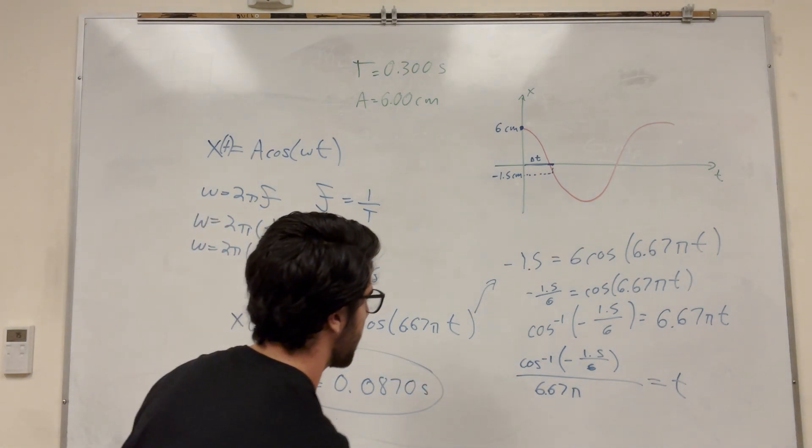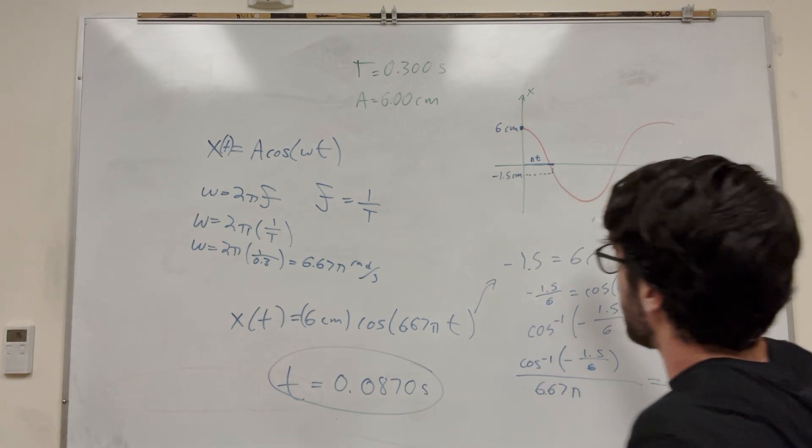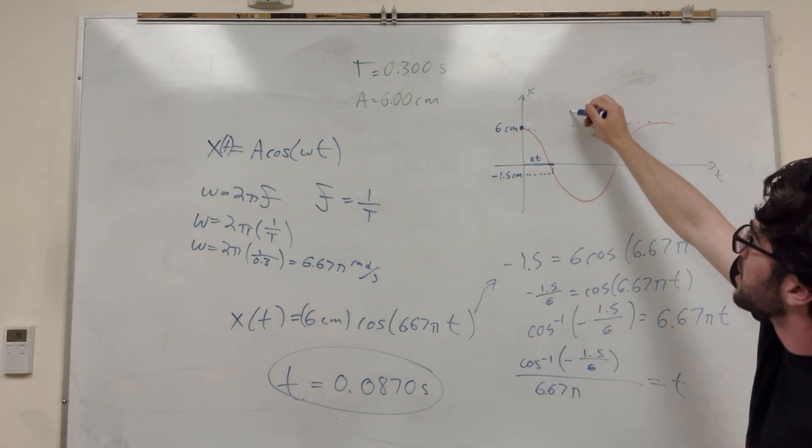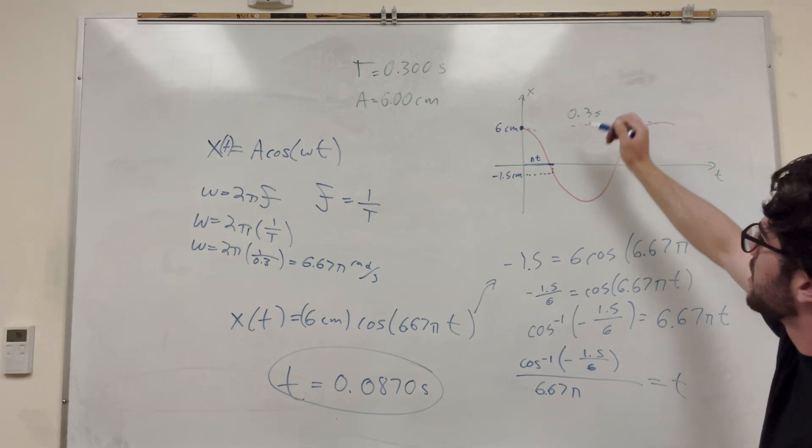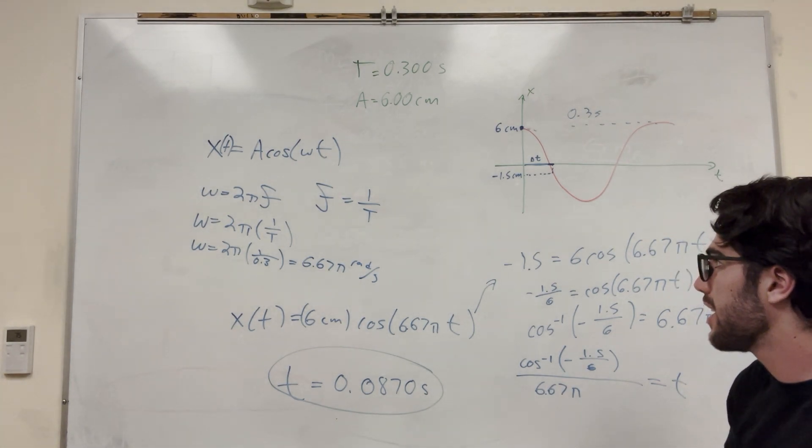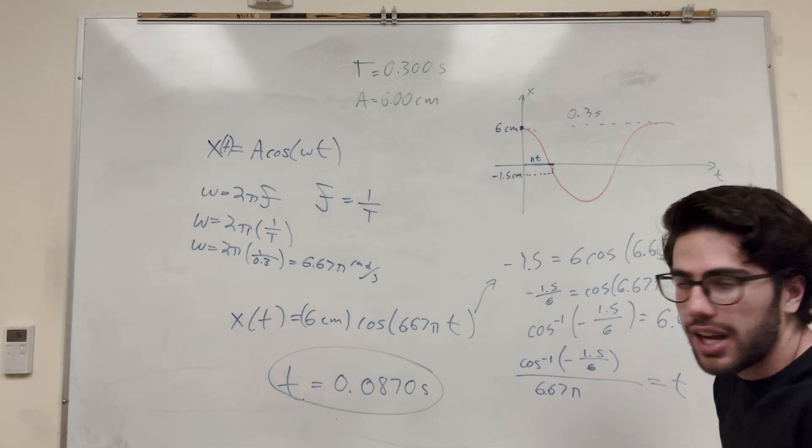So that's the time, basically. And that kind of makes sense, right? Because we know its period, which is the time it takes to go from here to here is 0.3 seconds. And then this is 0.08, it's about a fourth. Yeah, that kind of makes sense. It kind of calculates out. So yeah, that's how you solve this kind of equation.